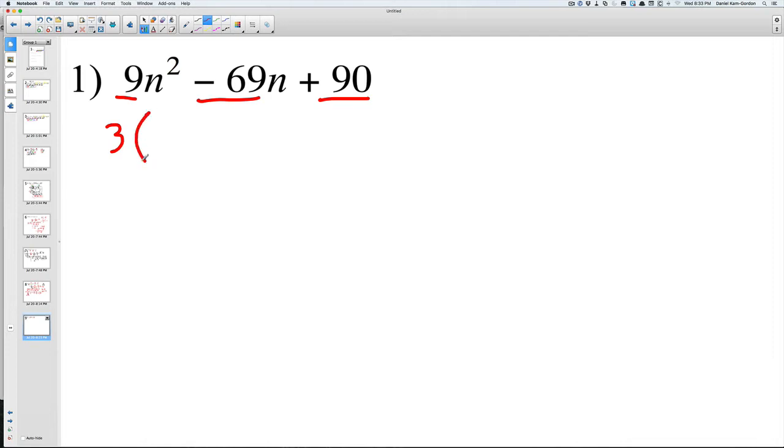If we take that one out, we have to figure out 3 times what equals 9, and it's 3 because 3 times 3 equals 9. So it's going to be 3n squared.